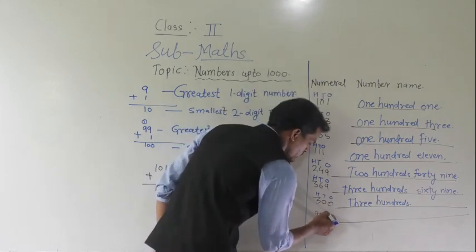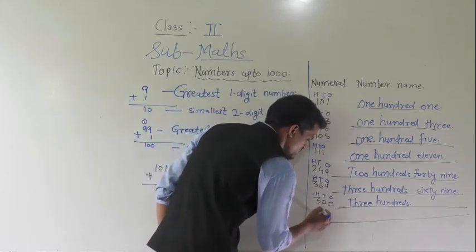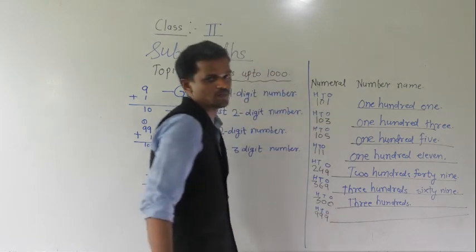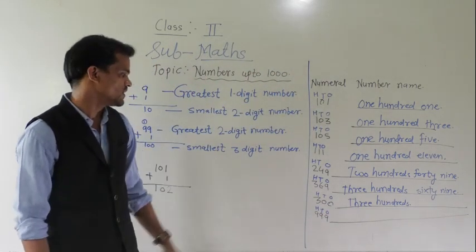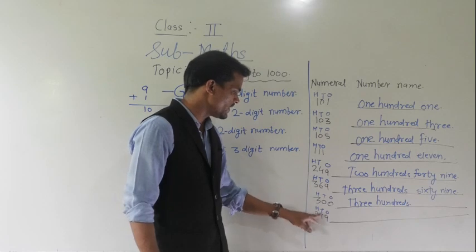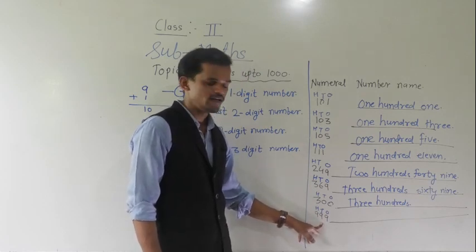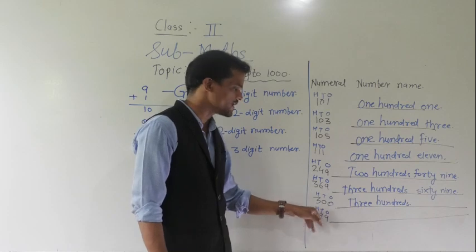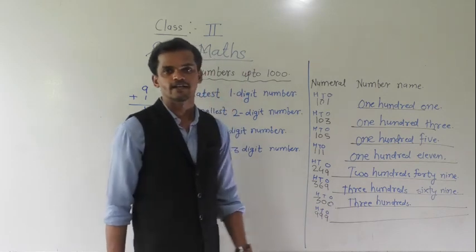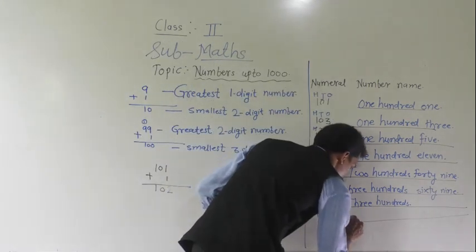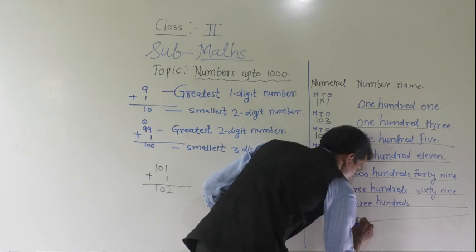Here, triple 9. So, 9 comes at 1 place, 9 comes at 10 place, and 9 comes at 100 place. So, 900; 9 tens means 90; 9 ones means 9. So, nine hundred ninety-nine.